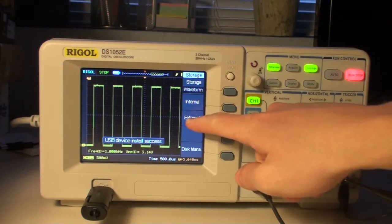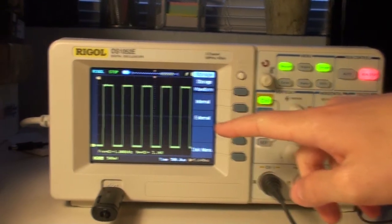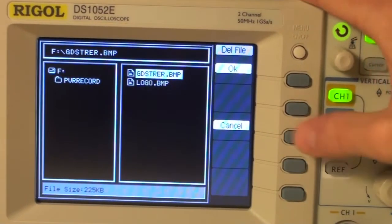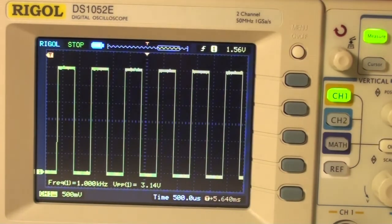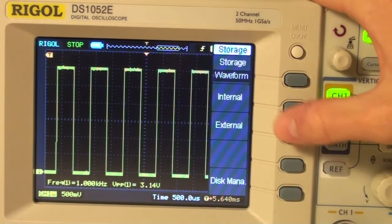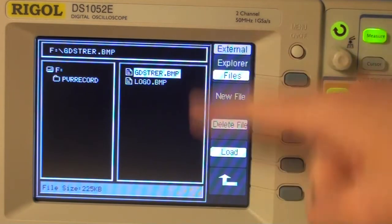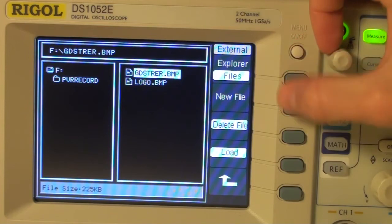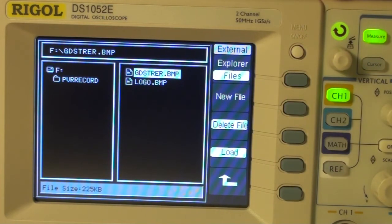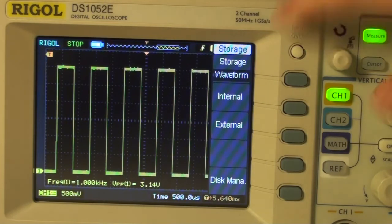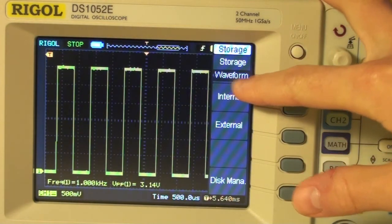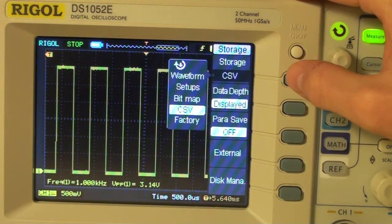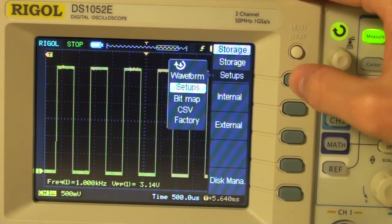Then we'll get the possibility to save it externally. So if we click external, we'll see the current files on the memory stick and we can press new file. Back at this storage, currently waveform is selected. We can select other files, for example the bitmap or comma-separated file. I'll just save a bitmap for now.